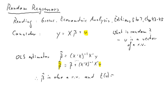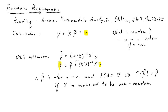If we make the assumption that the expected value of u is equal to zero, we get the result that the expected value of beta hat is equal to beta, and therefore unbiased, if x is assumed to be non-random. But what happens if x is also random? Then the right-hand side has more random terms — all the x's.